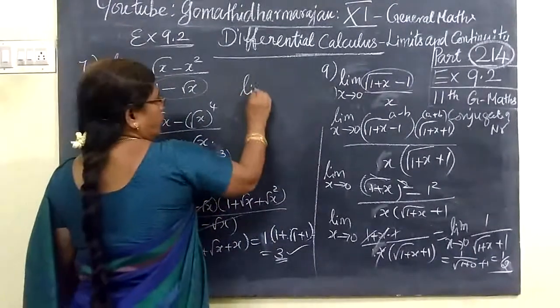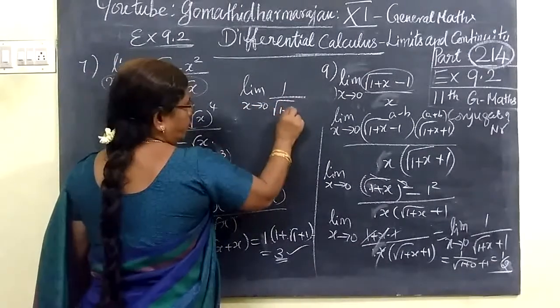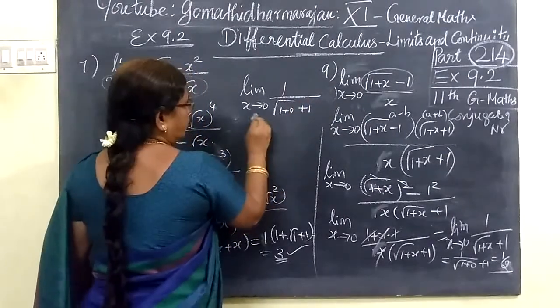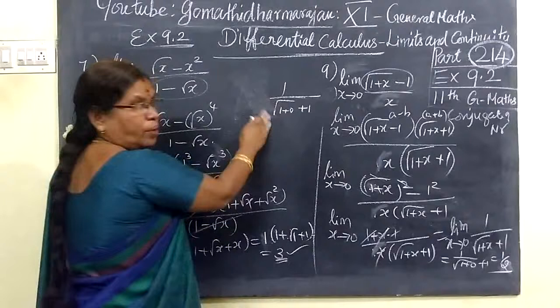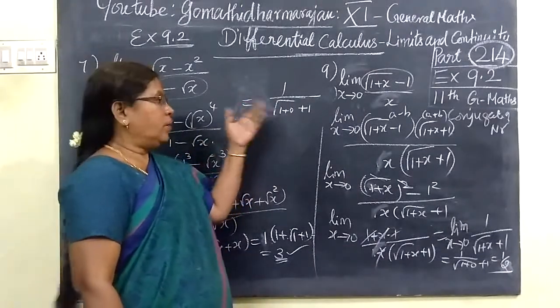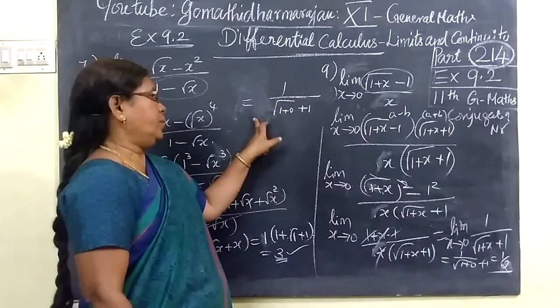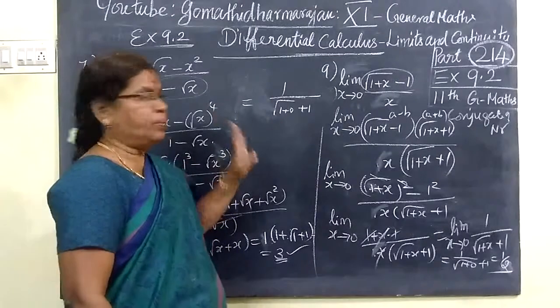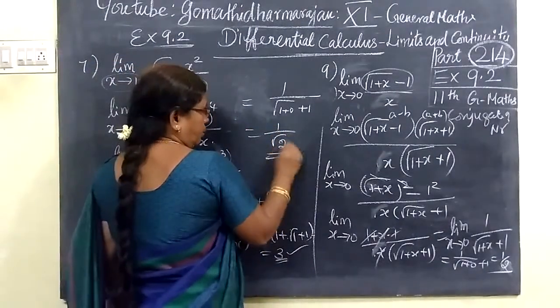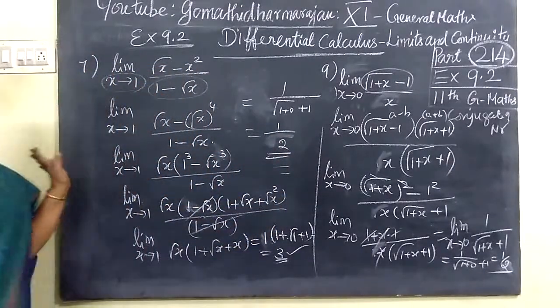So limit x goes to zero, one by root of one plus zero. This plus one is the value of zero. So this is one by two. Now root to simplify its root. So I hope this video is a learning function.